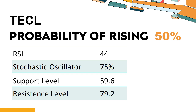Trend Outlook: The probability of TECL share price rising is 50%. When the probability of rising is higher than 50%, the stock has a higher chance of rising; if lower than 50%, the probability of falling is high. Combining multiple technical analysis indicators, TECL has four bullish signals and three bearish signals. TECL's short-term support level is 64.6; if it falls below 64.6, it will have a chance to test 59.6.